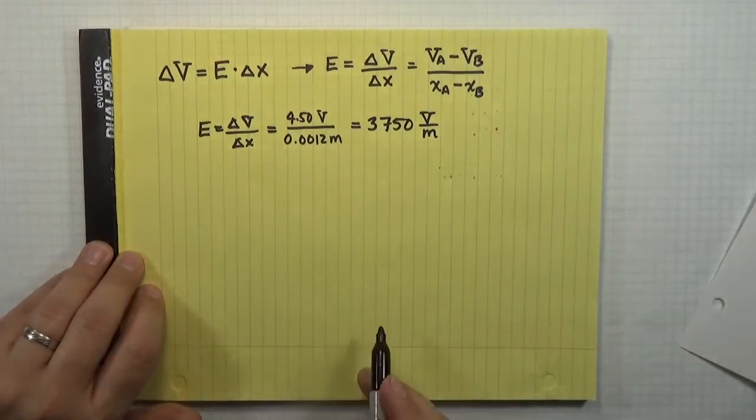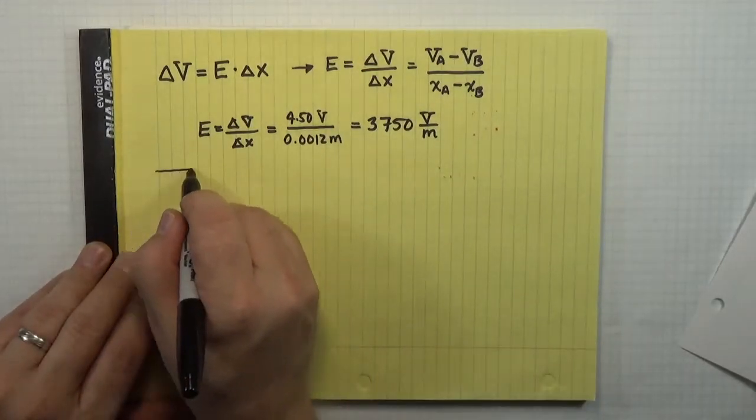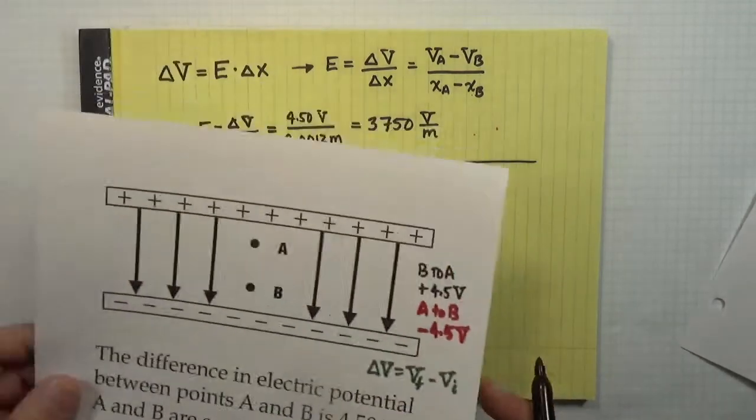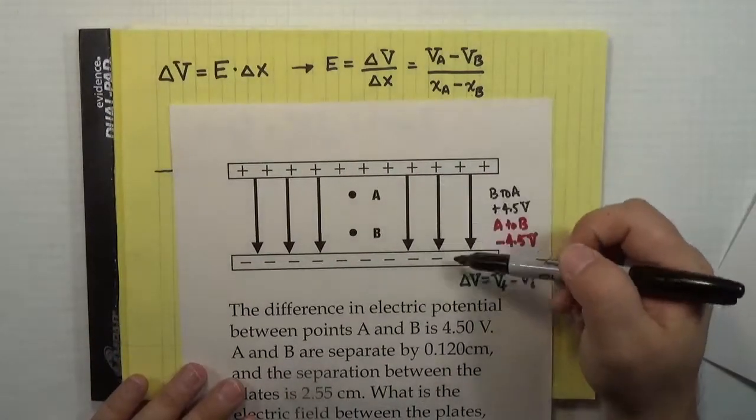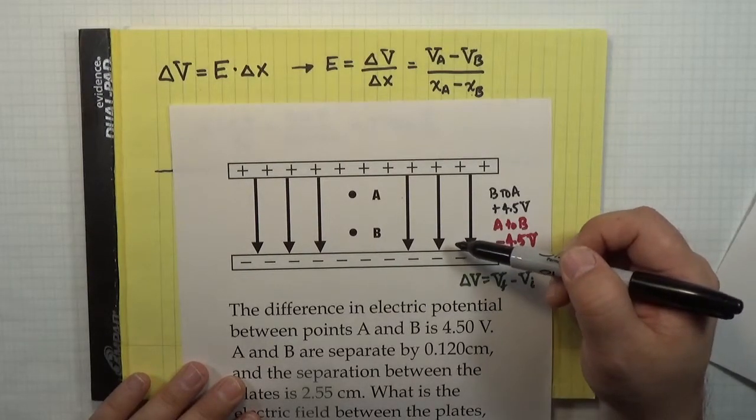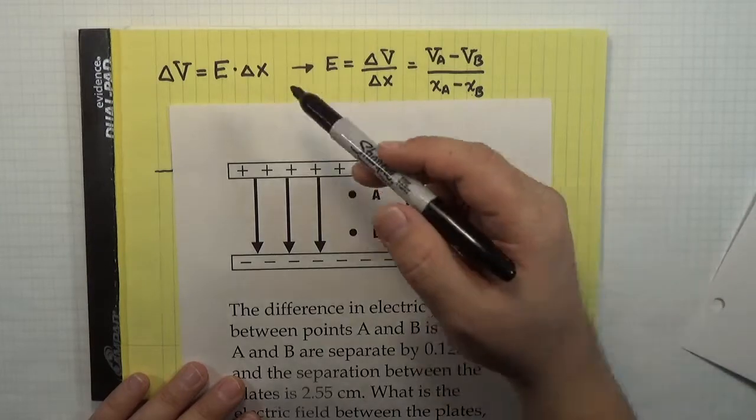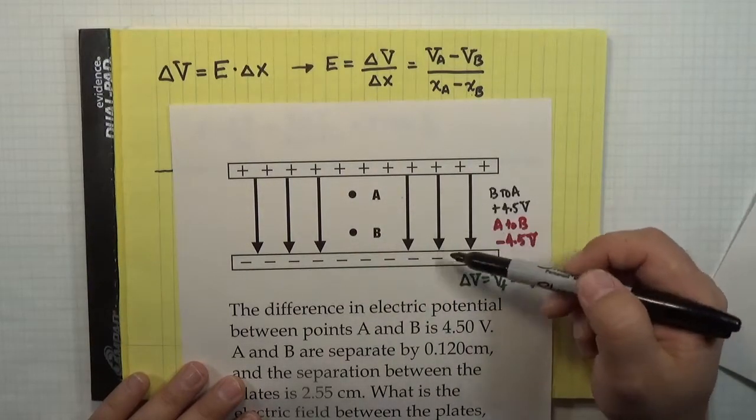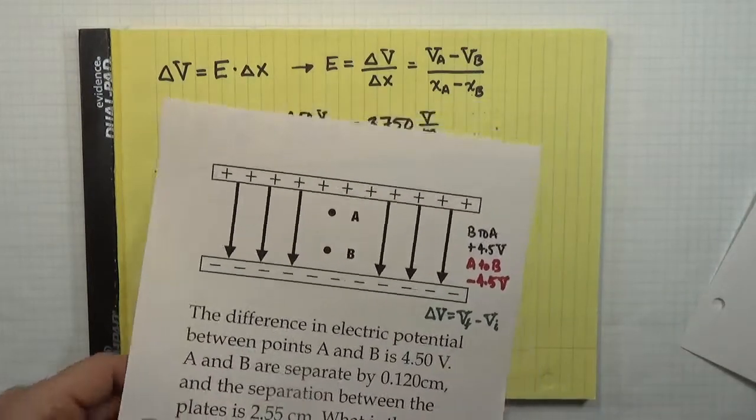Now, since we're working in a uniform electric field, I know everywhere in that problem, everywhere in between these two plates, that is the value of the electric field. So I'm going to use that using the exact same formula for potential and the separation of the plates to find the potential difference between the plates.